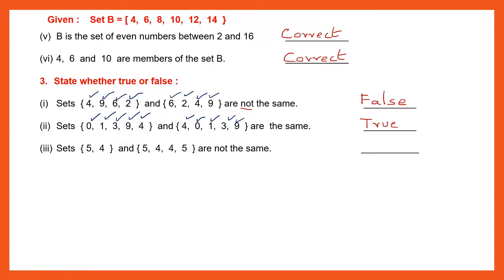Question 3: Sets {5, 4} and {5, 4, 4, 5} are not the same. Remember, if they have the same elements the sets are the same, even if elements are repeated. When we write a set, we don't repeat elements. Both sets contain 5 and 4. That means these two sets are the same. But the statement says they are not the same — so the statement is false.